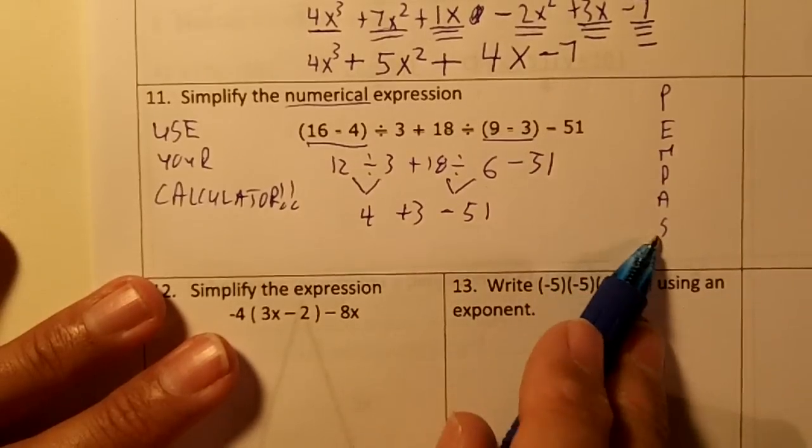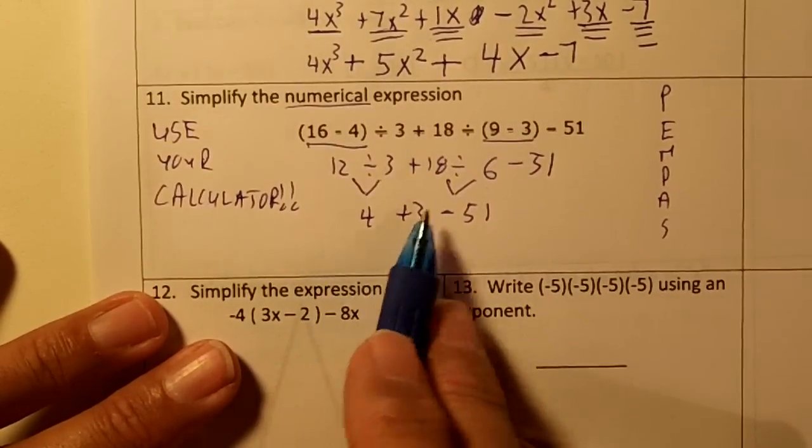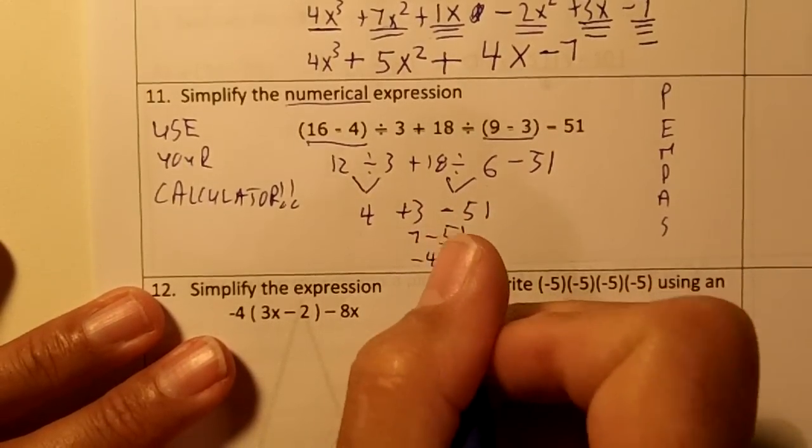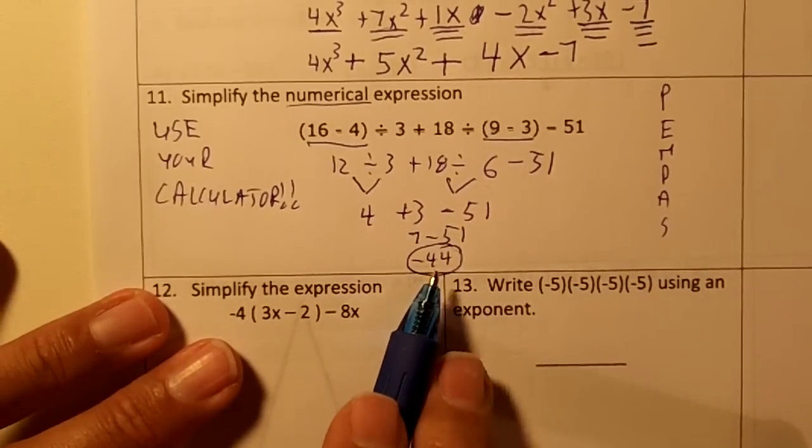Now then we're going to add and subtract from left to right. So 4 plus 3 is 7. And 7 minus a 51 is a negative 44. So the expression would simplify to negative 44.